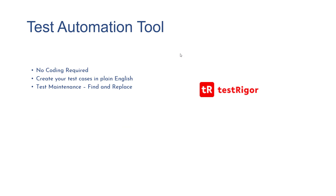The most important part of this tool is test maintenance. You can actually reduce test maintenance if you start using TestTrigger because it makes maintenance very easy. Suppose you have 100 test cases and because of some application change or locator change, something has to be updated across all test cases. Using TestTrigger you can find once and replace in all the test cases in one single click. So you can actually reduce the maintenance by 90 percent.